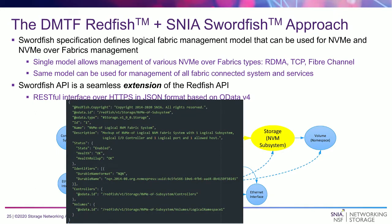Taking one component of that big system and looking at it from a Swordfish point of view: let's look at the storage subsystem. You have a JSON schema file — a very small piece of it — that defines what this component is, its interaction with other pieces it needs to interact with, the mandatory features and properties it needs, and the optional properties a user wants to configure for this particular component.